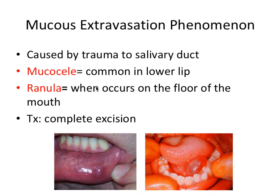So mucocele and ranula are both mucus extravasation phenomena, and the treatment would be complete excision. Complete is important because you have to remove the entire affected gland — this is just a minor salivary gland — otherwise you have a higher chance of recurrence. So you have to remove the entire accessory salivary gland.